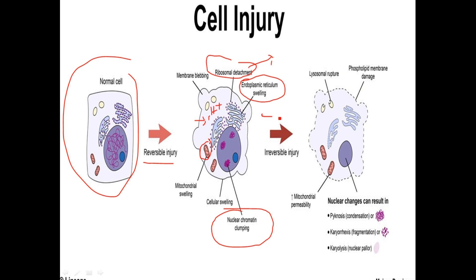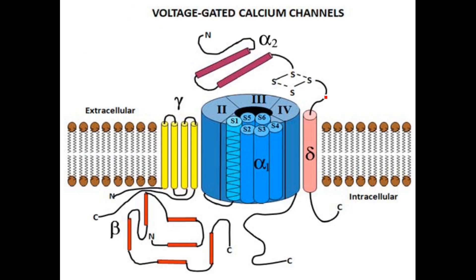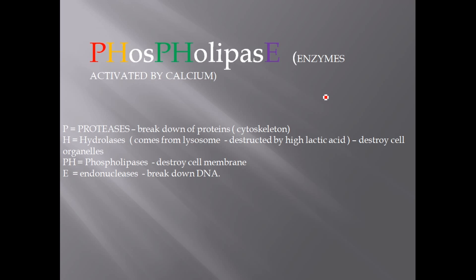If hypoxia persists, it leads to irreversible injury. Irreversible injury is driven by calcium influx — an increase in calcium inside the cell activates many unwanted enzymes. Using the code 'PHLP': Proteases are activated by calcium, breaking down proteins; they affect spindle fibers and microtubules involved in the cytoskeleton, causing deformity in cell structure.